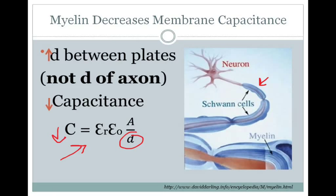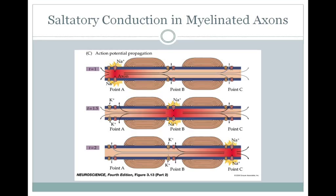Myelin also allows for what's called saltatory conduction. You have these nodes of Ranvier in between the myelin. Only at the nodes of Ranvier do you have the voltage-gated sodium channels, so only there can an action potential be generated.